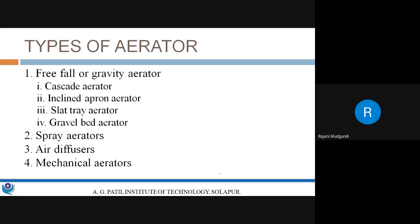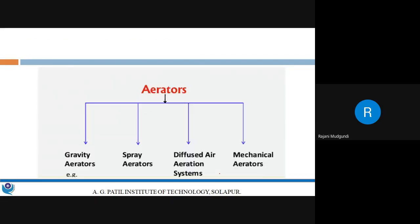There are various types of aerators. The classification includes: free fall or gravity type aerators, in which water is allowed to fall or flow under gravity; spray aerators, in which water is brought in contact with air in the form of spray; air diffusers, in which diffusers at the bottom of the aeration tank add air into the water; and mechanical aerators, which act as surface aerators.